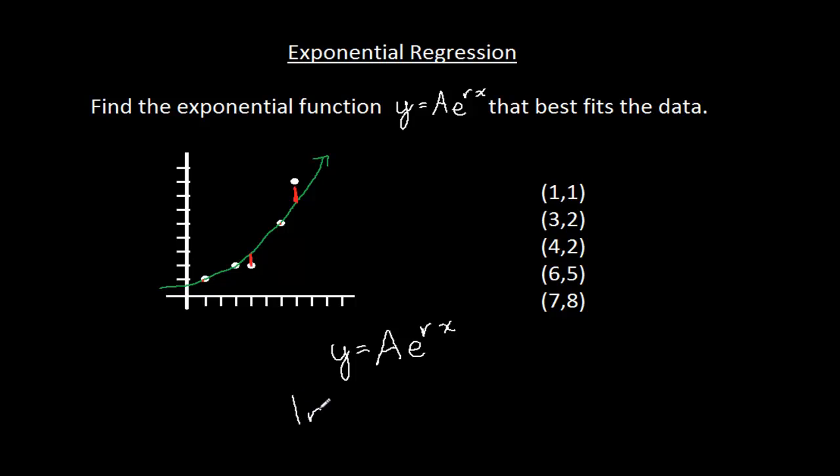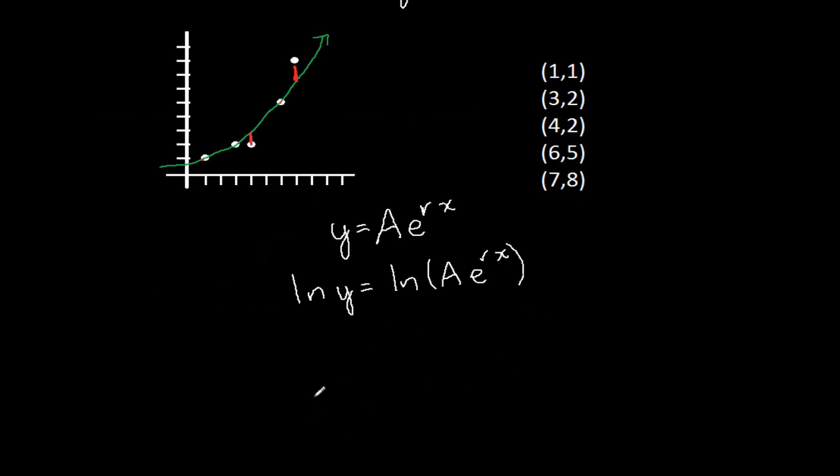Then if I take the natural log of both sides, that gives me the natural log of A e^(rx). And then I can use my log rules to break this apart. Natural log of y is natural log of A. If I have a product inside the log, then I can separate it into the sum of two logs. And the natural log of e^(rx) is just r times x.